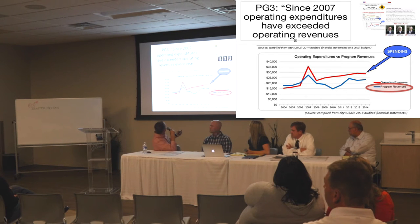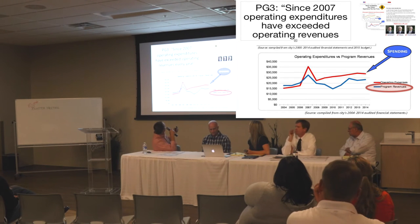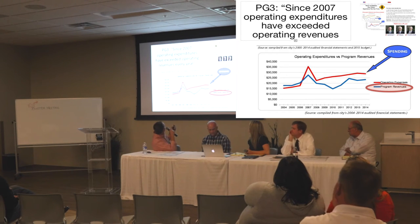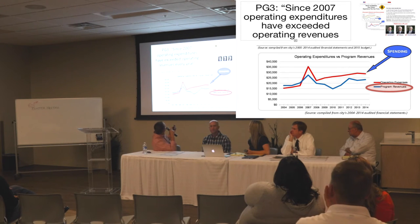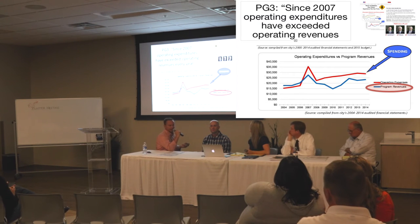Here they show program revenues and operating expenditures, but up in their wording they say operating expenditures have exceeded operating revenues. So we're a little confused, but we're going to touch base on both of them for you.